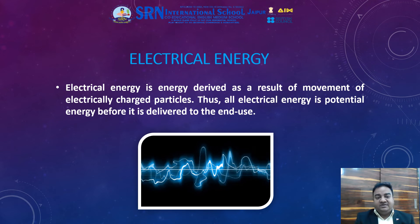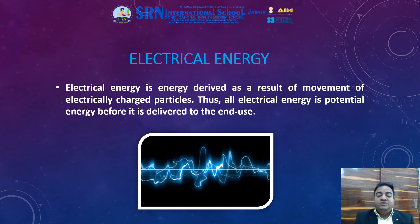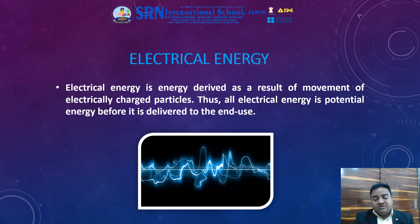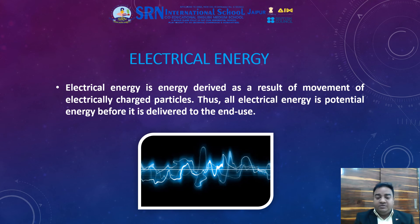Electrical energy is derived as a result of movement of electrically charged particles. All electrical energy is potential energy before it is delivered to the end. Electrical energy is generally the movement of electrons — when electricity is flowing from one end to another, it means the electrons are moving from one end to another, carrying energy. We can test the energy of a small cell by attaching a wire and touching it with our tongue to feel the vibration of the electrons. But never try it with electrical circuits at home, as it can be very injurious to your health.